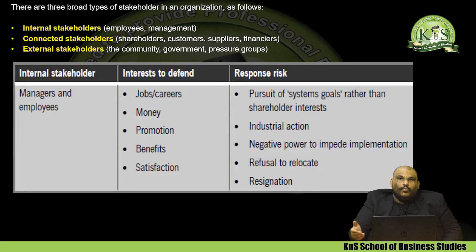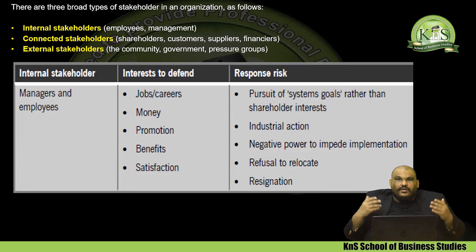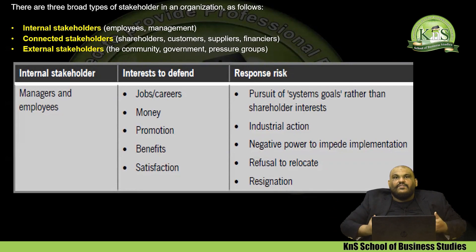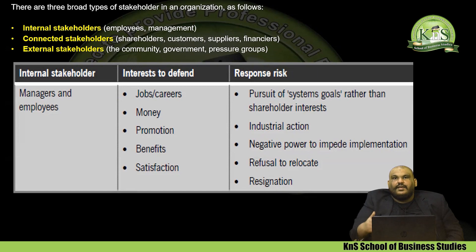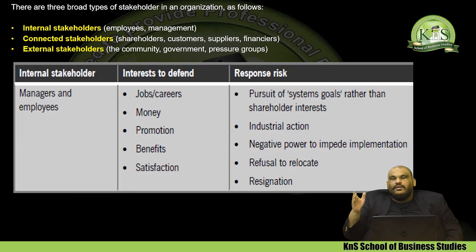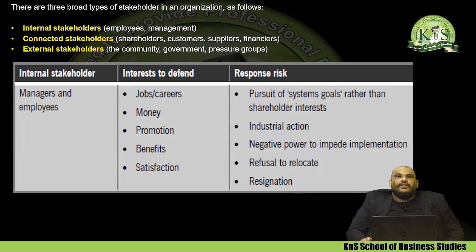If employees feel the business is not doing them any favors, they will work for themselves — doing the bare minimum to get paid and get out. Through trade unions they can take industrial action, impede implementation, or refuse to relocate. Workers can strike, picket, and stop the work process entirely. They can refuse to move to a remote location, saying: this is where my family and my home are — I'm not abandoning them just to work for you.